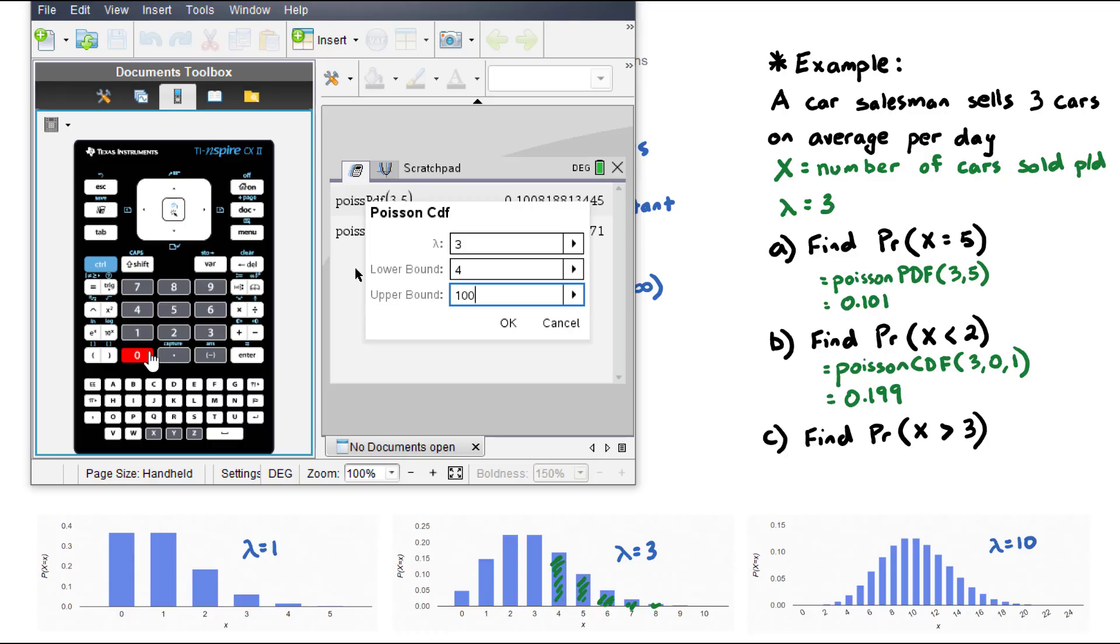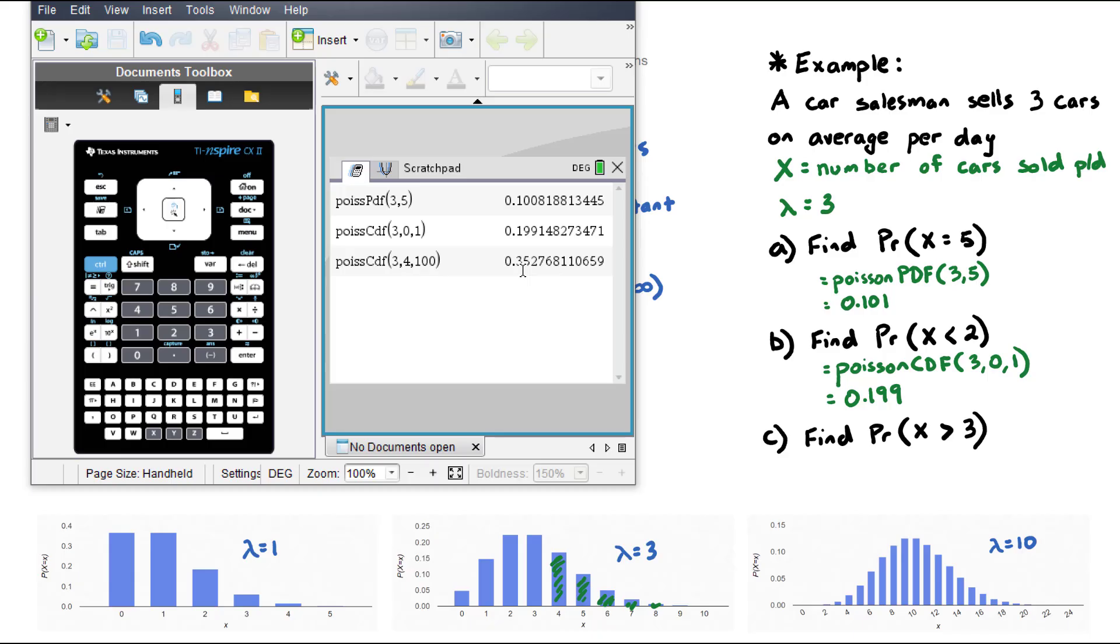But in comparison to a lambda of 3, a value of say 100 is a very large number. And you can see here it's almost negligible in terms of the probability. That represents the car salesman selling 100 cars in a day, which would probably take an hour to sell to each customer. This is a very large number in comparison to the lambda. Hit OK, and we get that probability.